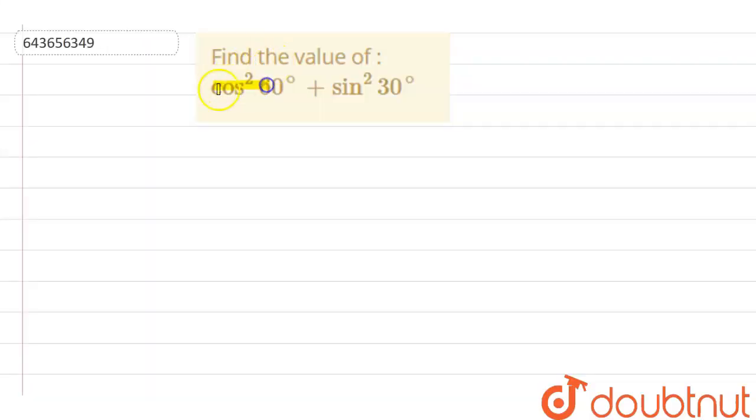Here the question is find the value of cos square 60 degree plus sine square 30 degree. So we can also write it as: